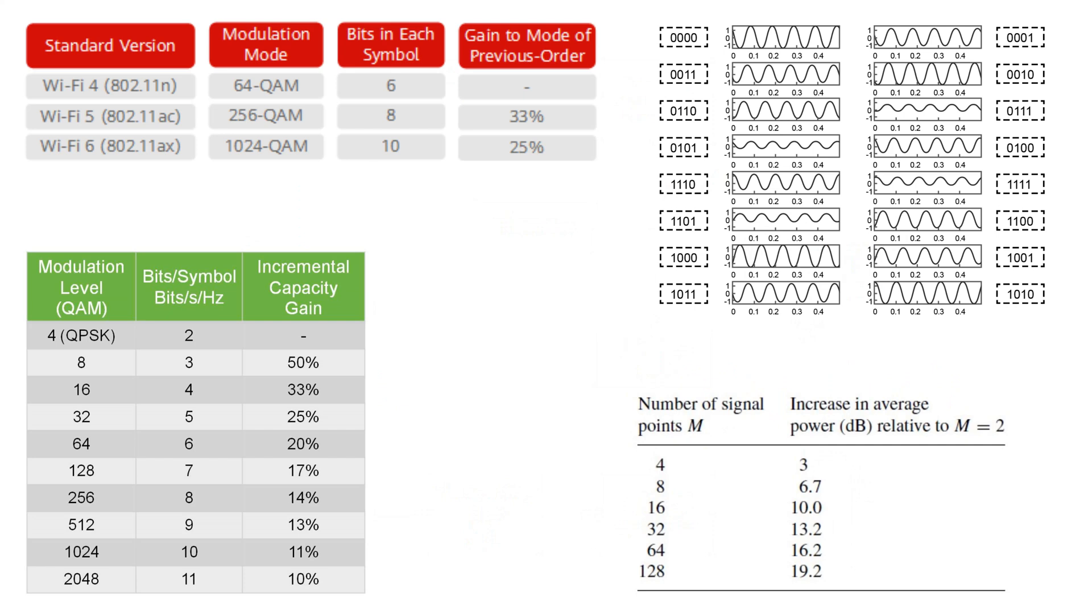The more symbols we use, the higher the data rate, but this also increases the complexity of the system and the required signal-to-noise ratio for reliable communication.